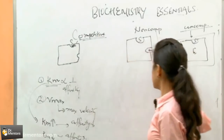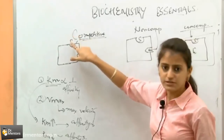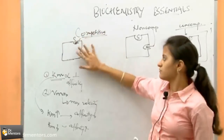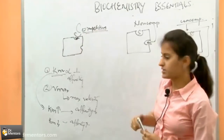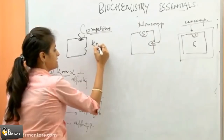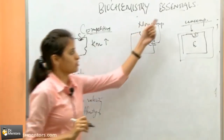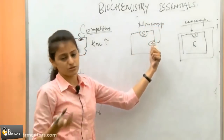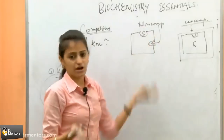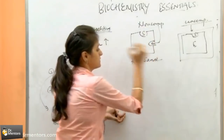Amongst these, it is competitive inhibition which is competing with the substrate, and that is why it decreases the affinity of the substrate for the enzyme. So affinity is decreasing, so Km is increasing. In non-competitive inhibition, the inhibitor is not binding to the substrate site, so the affinity is not affected and Km remains the same.